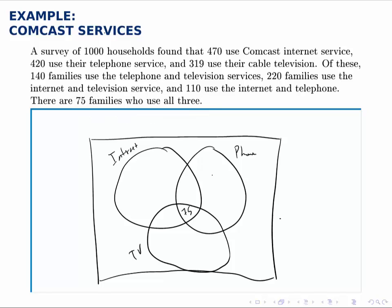Then we work outward to the other intersections. For the intersection between internet and phone, we look through the word problem and find those who use the internet and the phone service — that's 110. Since we've already accounted for 75 of them, there must be 35 remaining: 110 minus 75 equals 35.